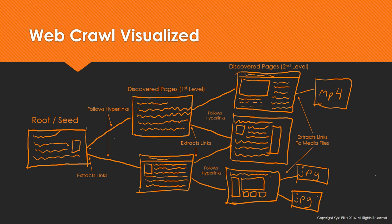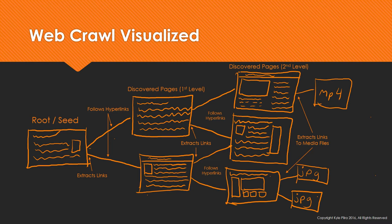What the webcrawler is going to do is extract those links and follow them to new pages — that's what we call the first level of discovered pages. You can see it follows the hyperlinks and finds those pages, and on those pages it's going to do the exact same thing: extract the content, find any links, extract those, and follow those. Then it goes on to its second level of discovered pages, and it'll just keep going on and on forever, hypothetically speaking.